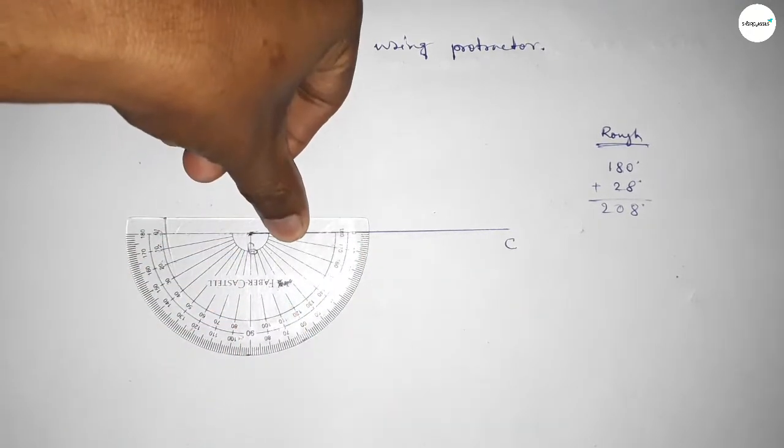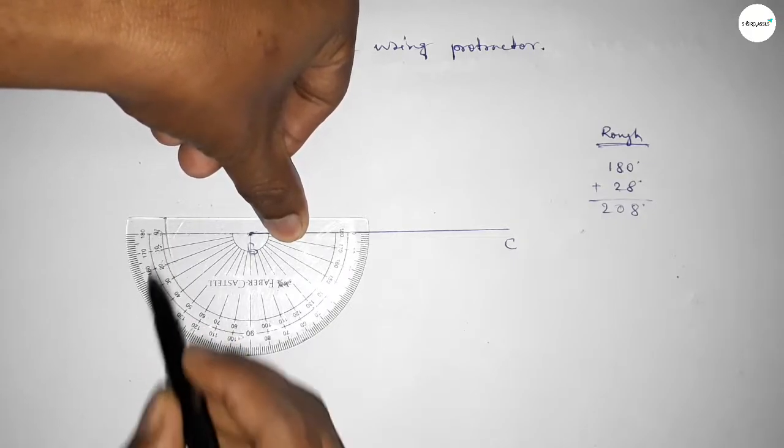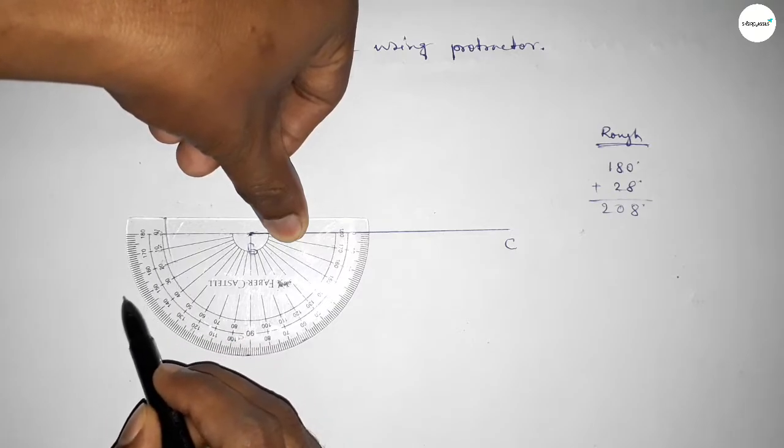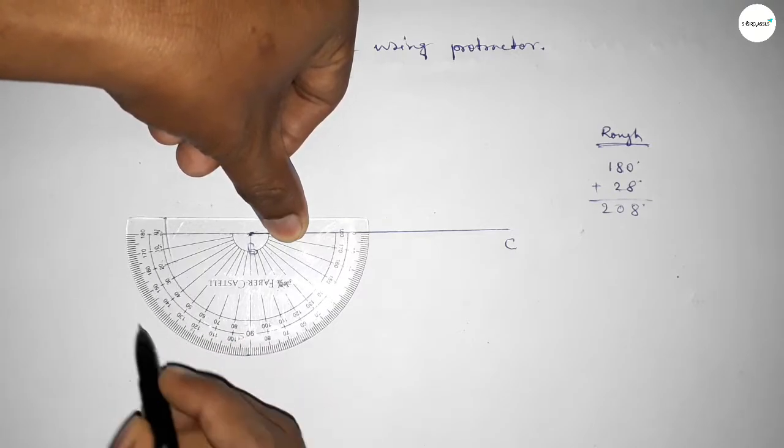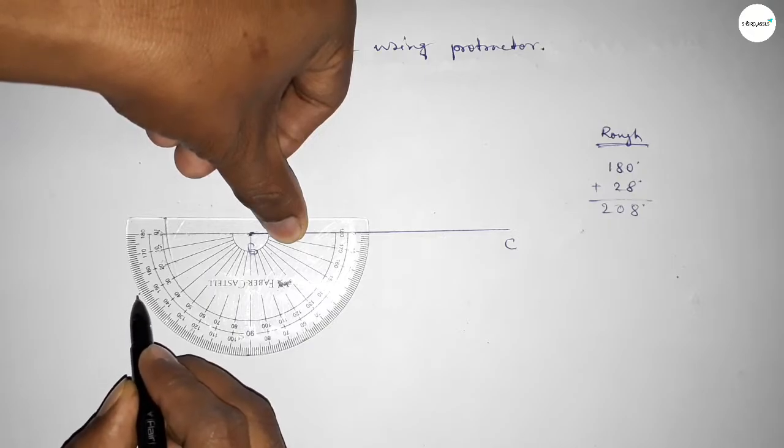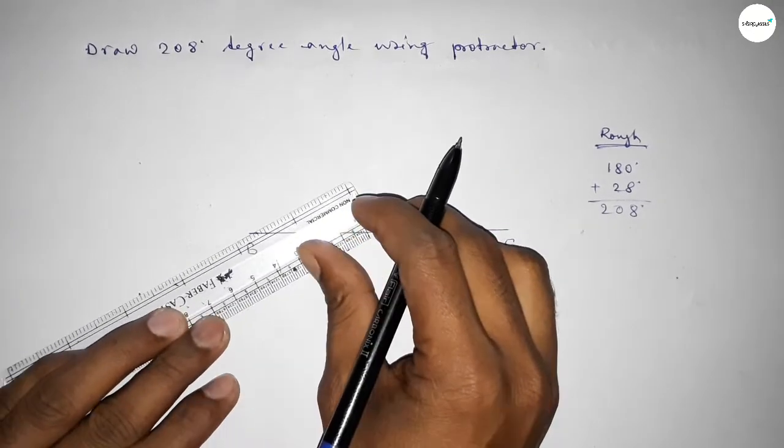And counting 28 degree angle. Now this represents 180 degree angle. This is also starting angle: 0, 10, 20, 25, 26, 27, 28. So this is 28 degree. Now adding 28 degree angle with 180 degree, then we can get 208 degree.